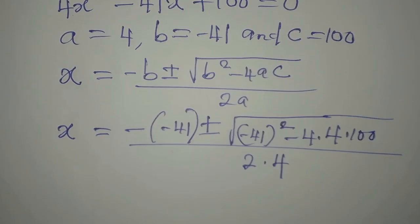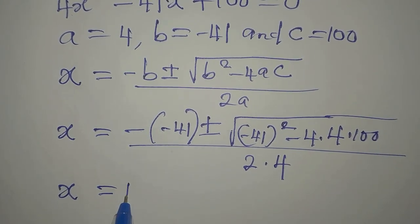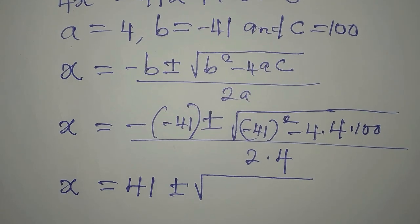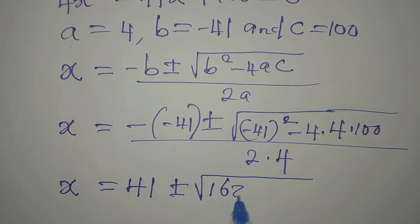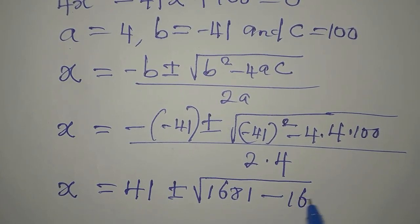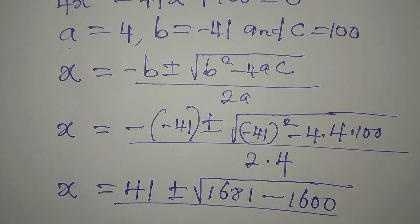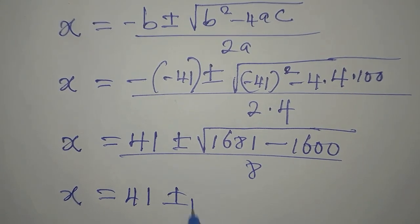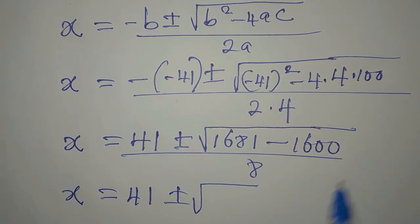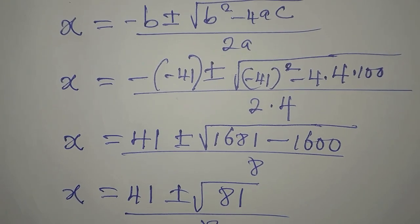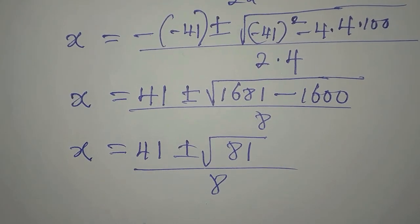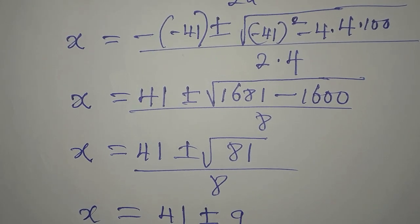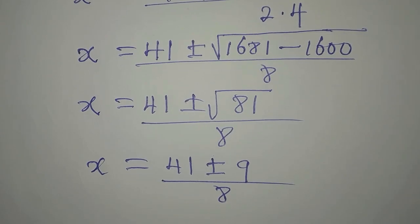Continuing: 41 squared gives 1681, and 4 times 4 is 16, times 100 is 1600. So we have x equals 41 plus or minus square root of 1681 minus 1600, which gives 81, all over 8. Since 81 is a perfect square, the square root of 81 is 9.